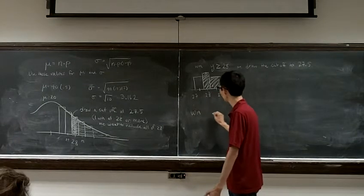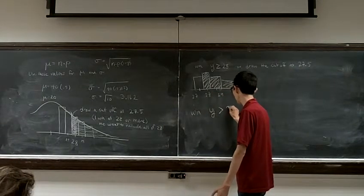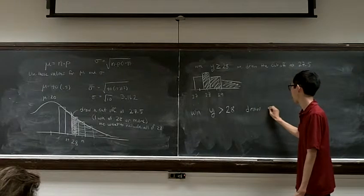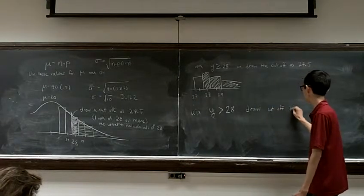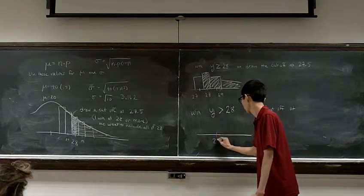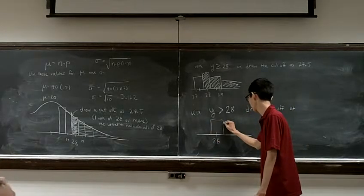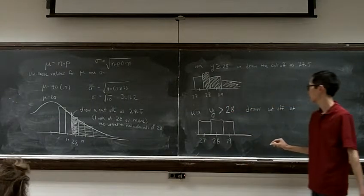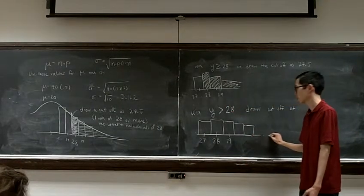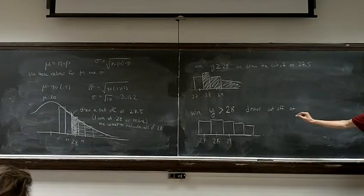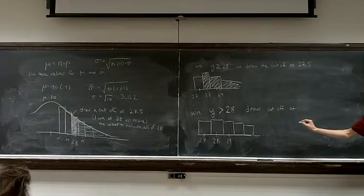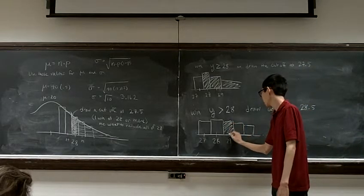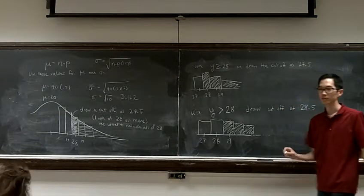And this is where things like greater than, greater than or equal to make a big difference. So over here I said we win if Y is greater than or equal to 28. In that case, we draw the cutoff at 27.5. And the illustration being here I've got 28, here I've got 27, here I have 29. And I want to include all of 28, all of 29 and everything beyond. But if I had just changed it ever so slightly to say win at Y greater than 28, where would I draw my cutoff?